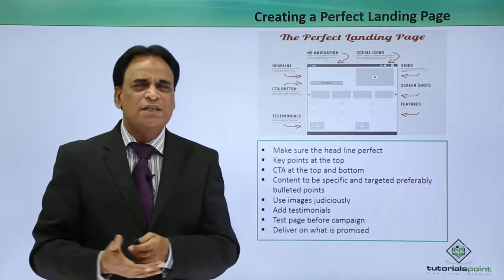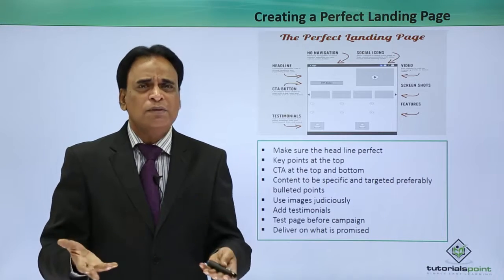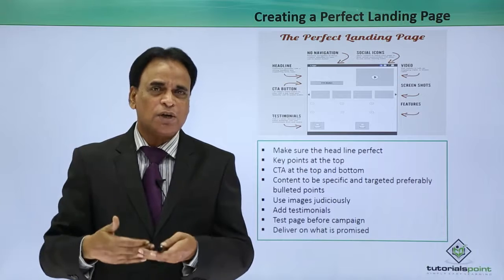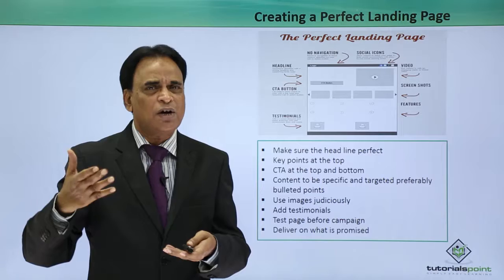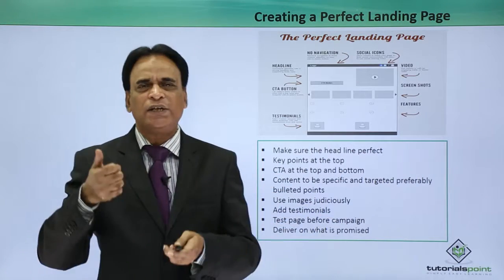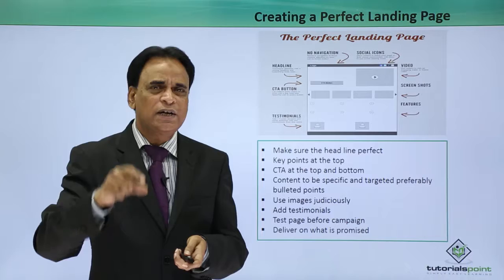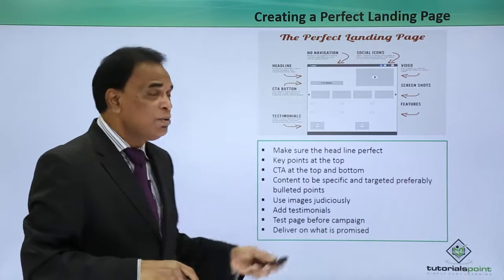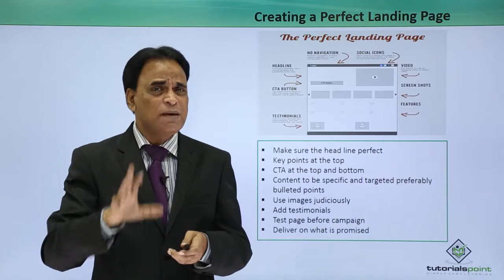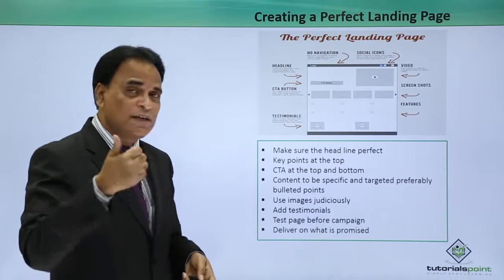CTA at the top and the bottom — this is actually a debatable issue. Some marketers say you can put the CTA at the bottom, some say you can also put it at the top. The normal practice is CTA can be given at the top of the page and also at the footer. Make sure you give two CTAs — two call to actions at the top and bottom — and you can do an A/B test to see which one is working. Content should be specific and targeted, preferably bulleted points. Do not write lengthy paragraphs; make sure it is bulleted points. Use images judiciously — images including infographics help immensely in engaging with your customers. Use images within the content; in between, use images or even infographics related to your product.